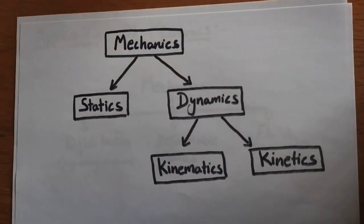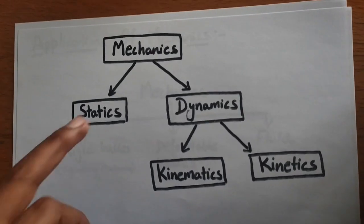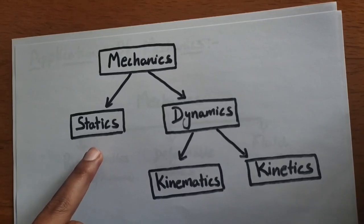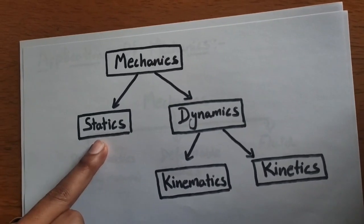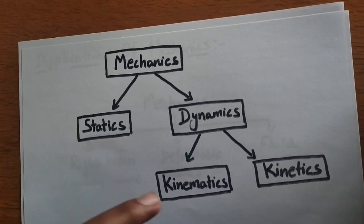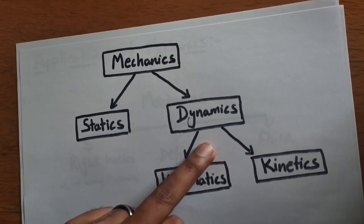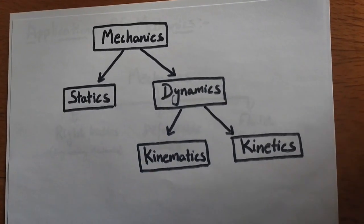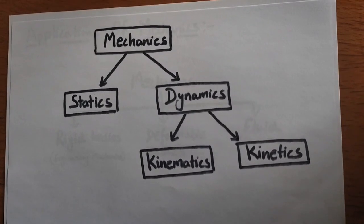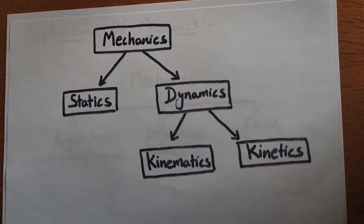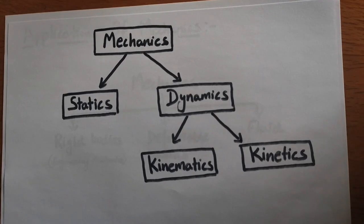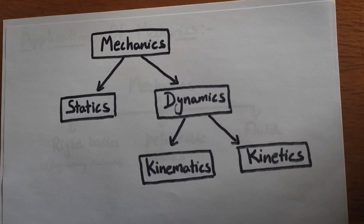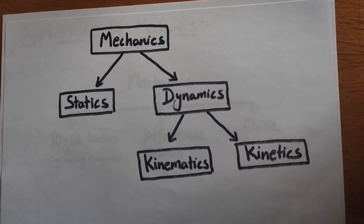So this is the block diagram. In mechanics we have two categories: statics and dynamics. In statics we study the behavior of bodies at rest, and in dynamics we study the behavior of bodies in motion. Dynamics has two further categories: kinematics, where we study the behavior of bodies in motion without considering the cause of motion, and kinetics, where we study the behavior of bodies in motion along with the force causing the motion.